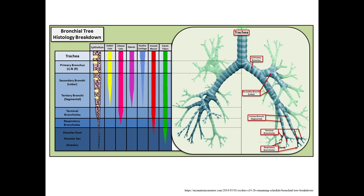I'll end here with another review slide. This one summarizes the structural changes that we can observe histologically as we move down the bronchial tree. You should know these differences as it will help you distinguish among the different components of the conducting zone in the lab. We've now traveled from the nose to the beginning of the pulmonary lobule, which includes the respiratory bronchioles, the alveolar ducts, and the alveoli. So we'll stop here and explore the respiratory zone of the respiratory system in the next tutorial. Thanks for stopping by.